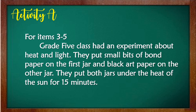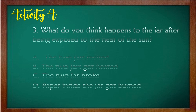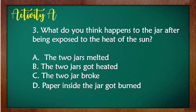For numbers 3 to 5, a Grade 5 class had an experiment about heat and light. They put small bits of white paper on the first jar and black art paper on the second jar. They put both jars under the heat of the sun for 15 minutes. Number 3: What do you think happens to the jars after being exposed to the heat of the sun? The answer is letter B — the two jars got heated.